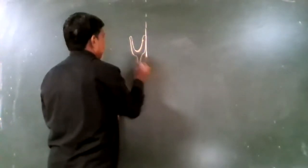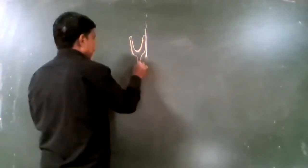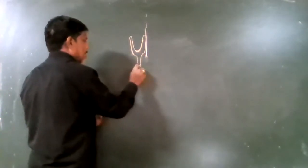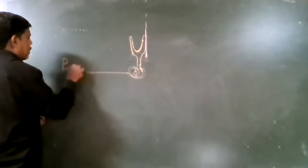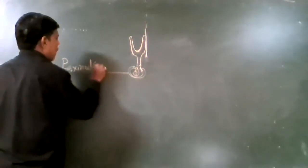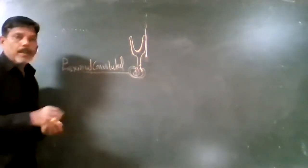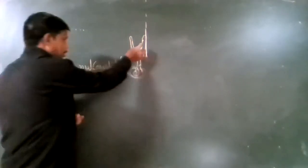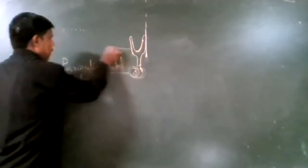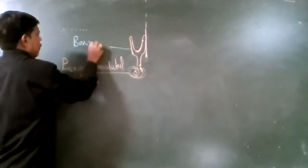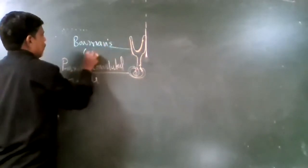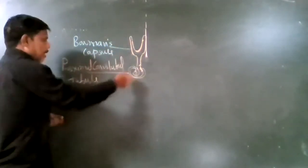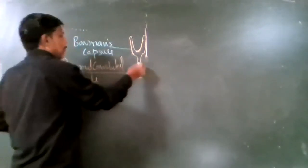The proximal convoluted tubule has a cup-like depression and a coiled or convoluted tubule. This cup-like depression is called Bowman's capsule. It is the proximal part, hence it is called the proximal convoluted tubule. This capsule is connected with the proximal convoluted tubule with the help of a neck.